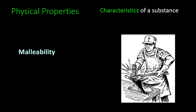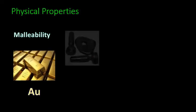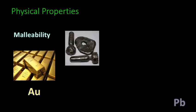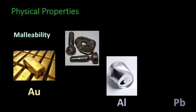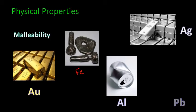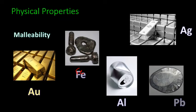Now, a substance's malleability describes whether or not it can be pounded into sheets without breaking. Some common substances that we would say are malleable would be gold, iron, aluminum, silver, and lead. Those are all very malleable. Can be pounded into sheets without breaking.